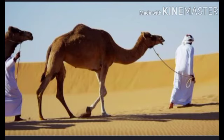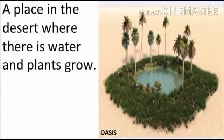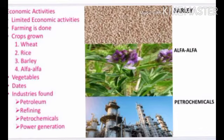Now let us talk about the economic activities done by the people living in Saudi Arabia. The main occupation here is cattle rearing and farming. As there is a shortage of water in these deserts, in some places the underground water comes to the surface and forms an oasis — these are the fertile areas where farming is done. Wheat, rice, barley, alfalfa, and dates are some of the crops grown here. The Al-Ahasa is the largest oasis in Saudi Arabia.